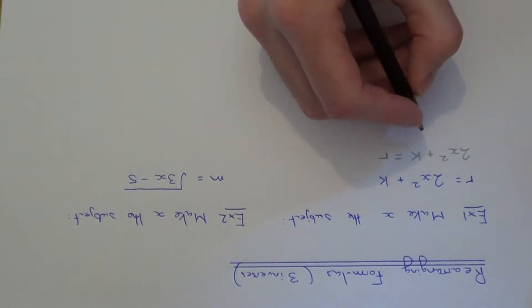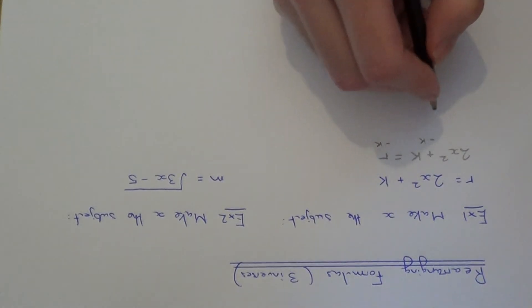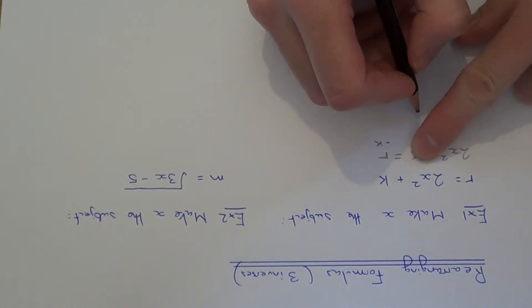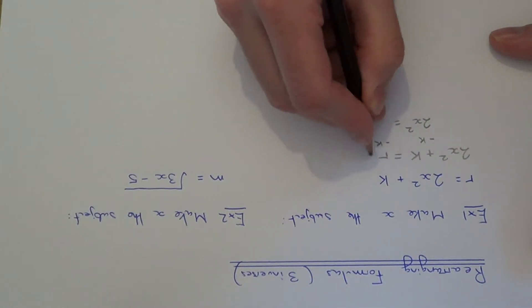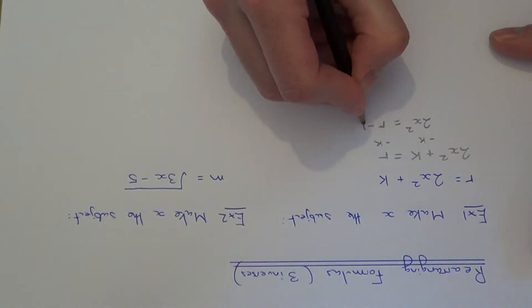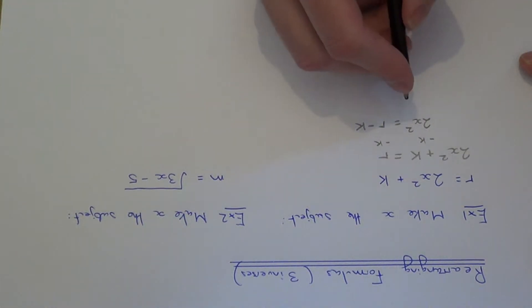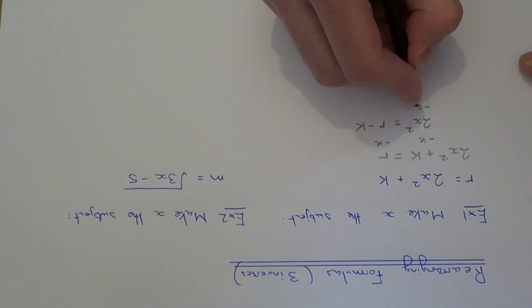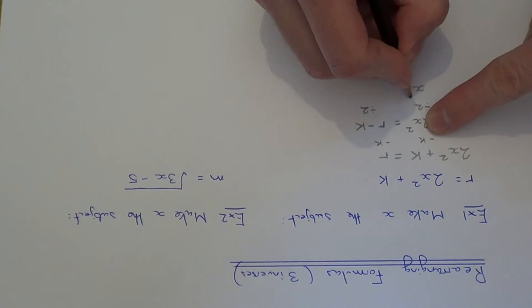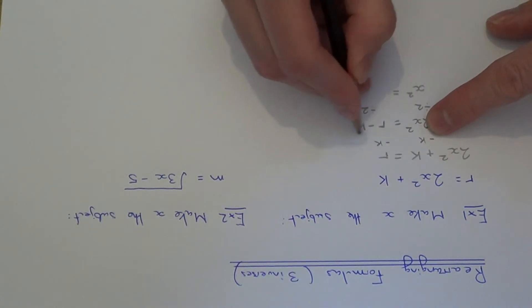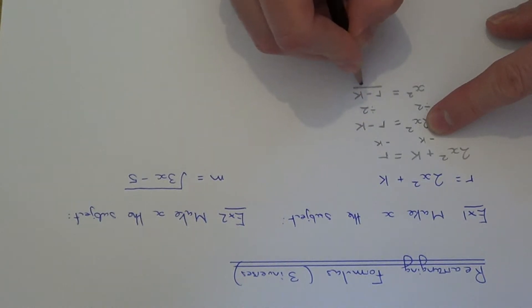First of all, let's get rid of the plus k. We can do this by subtracting k from both sides. That will get rid of the k off the left-hand side and leave you with 2x squared. On the right-hand side, it's just r minus k. The next thing we need to get rid of is the times 2, so divide both sides by 2. This will remove the 2 off the left-hand side and leave you with x squared, and we write the right-hand side as a fraction.